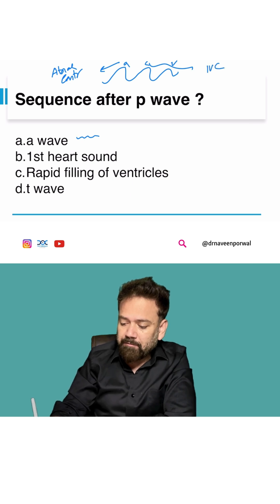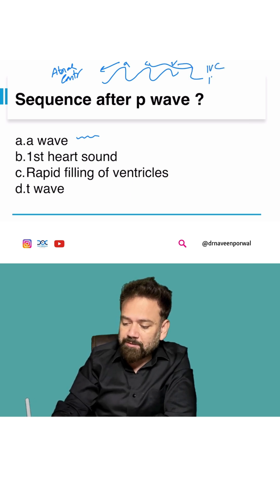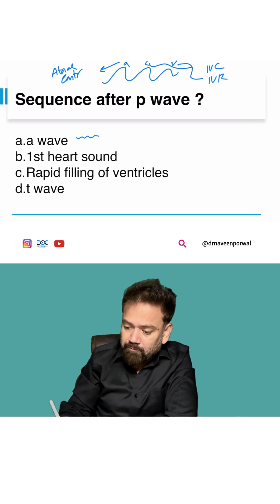V wave is during isovolumetric relaxation. So A wave means it is telling you about atrial contraction.